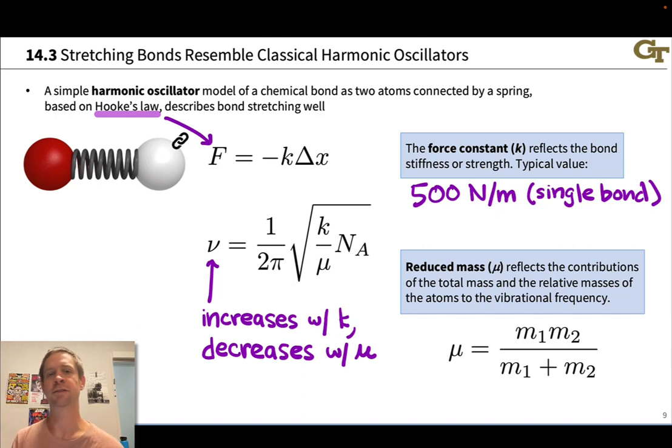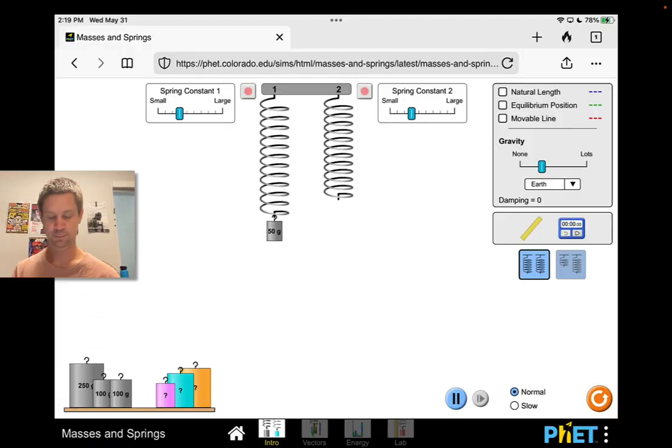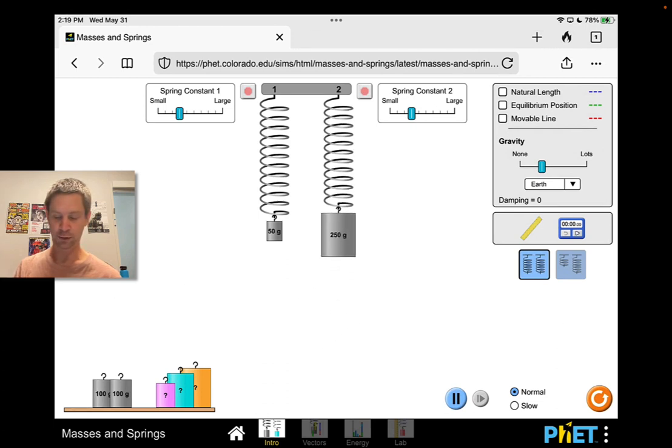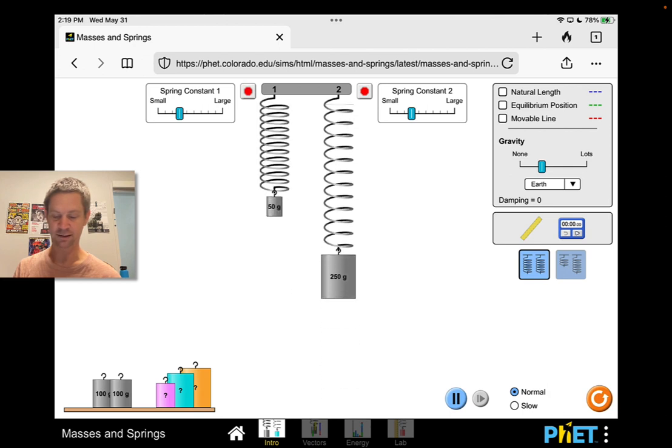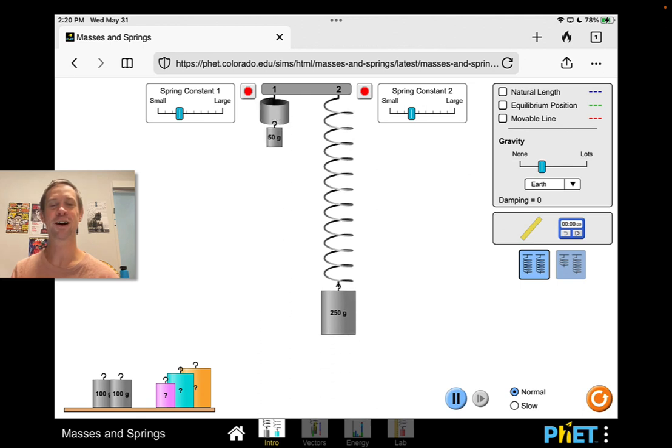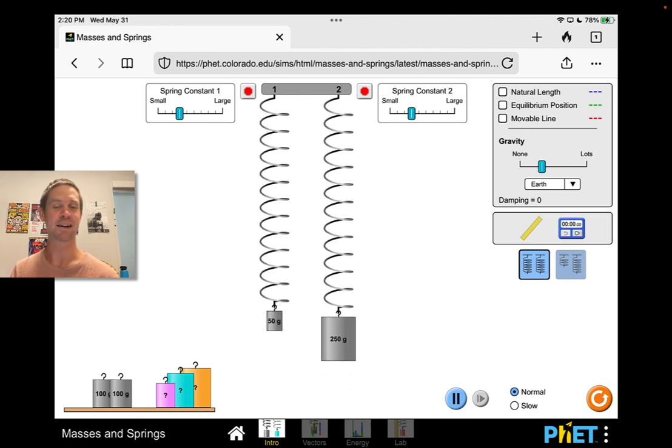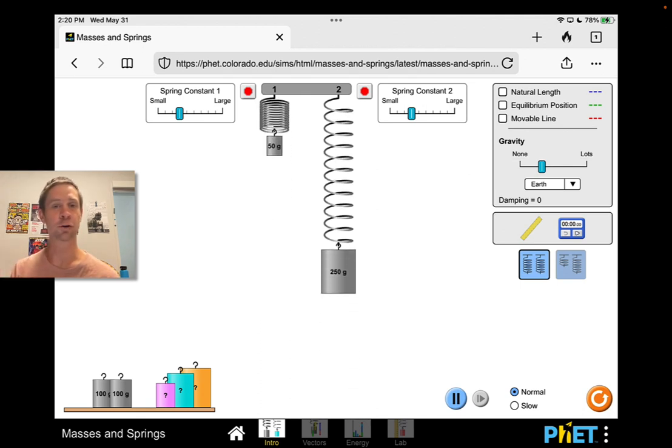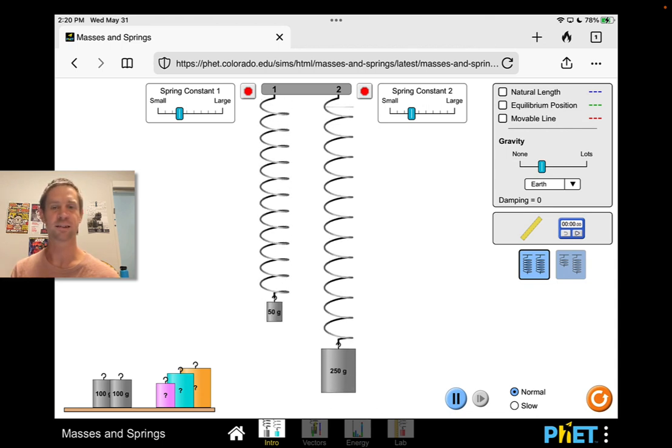Let's take a look at a simulation of a classical spring to get a sense of how this works. First let's take a look at the effect of a change in mass. Say we go from 50 grams on one spring to 250 grams on the other and we set these oscillating. It's very clear that the lighter mass is oscillating at a much higher frequency than the heavier mass. This is a direct consequence of Hooke's Law and this harmonic oscillator model.